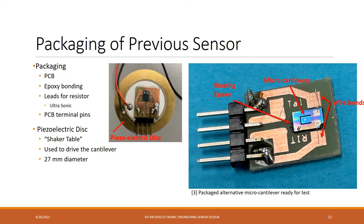To test the cantilevers, they needed to be packaged. To package them, the cantilevers were placed on a PCB board and bonded with an epoxy. Wires were bonded using ultrasonic techniques from the resistor to the PCB board, and then leads were soldered onto the PCB. In addition to that, the whole package was placed on a piezoelectric disc which acts as a shaker table, vibrating the entire chip and the cantilever as well.